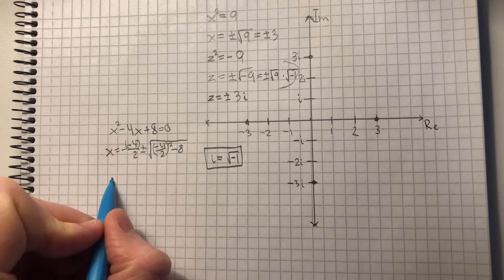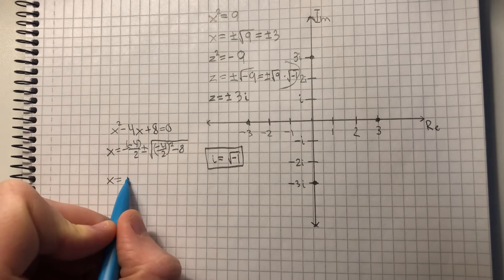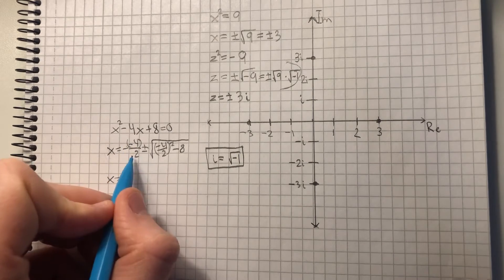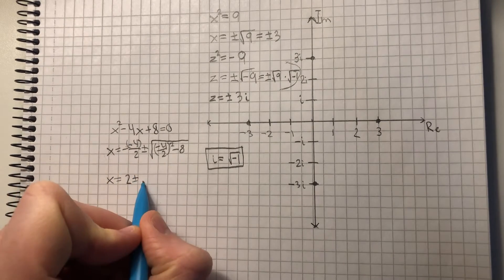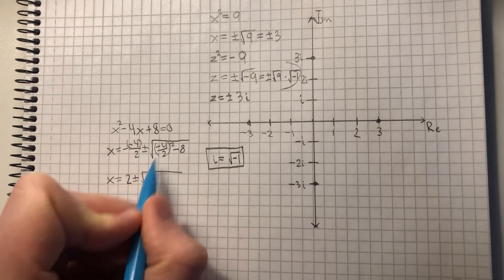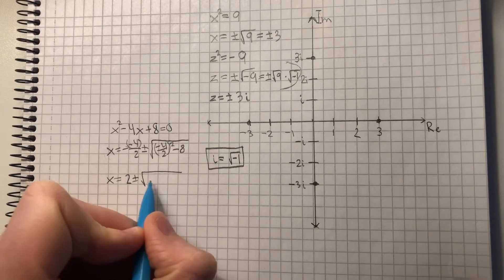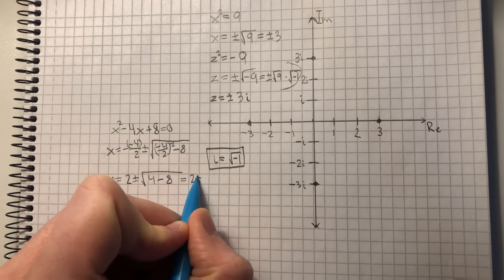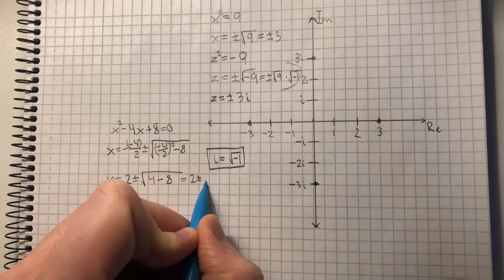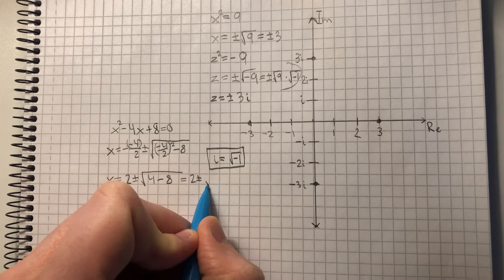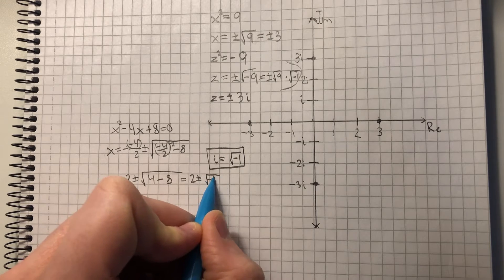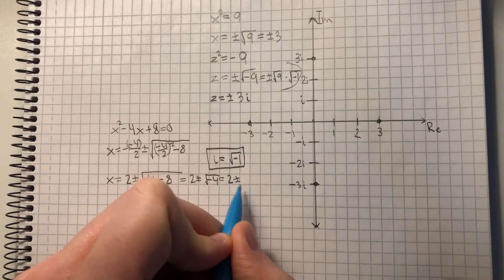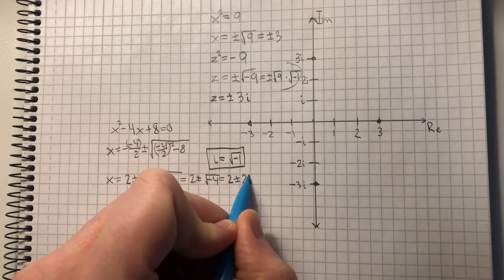So x equals 2, this is 2, plus minus the square root of 4 minus 8, equals 2 plus minus the square root of minus 4, which is 2 plus minus 2i.